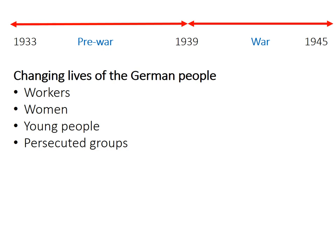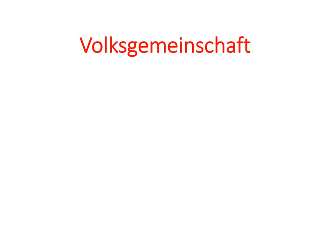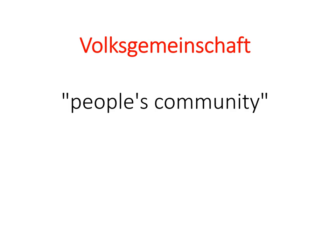Before I jump into the specifics, I want to introduce a word we're going to use a lot in the next few videos: Volksgemeinschaft. This is not a term that was created in Nazi Germany — it actually began being used in the First World War — but the Nazis really used it a lot. Very simply, it means 'people's community,' and the Nazis were trying to create a Volksgemeinschaft in Germany. Importantly, it is not everyone's community, and I'm sure you're already thinking about which people are included and which aren't.